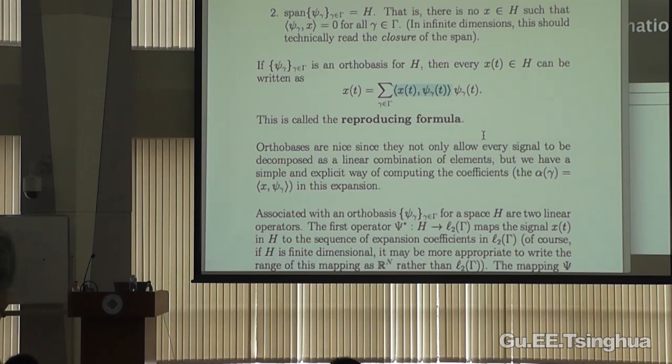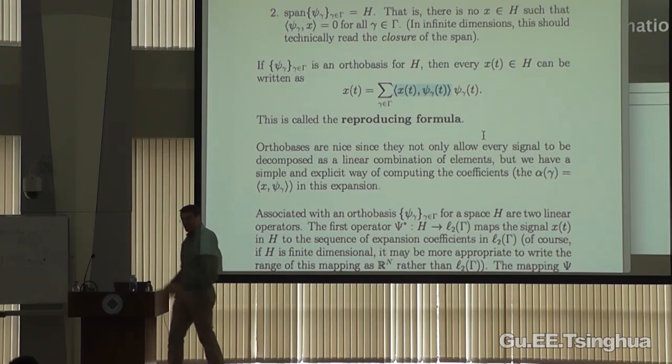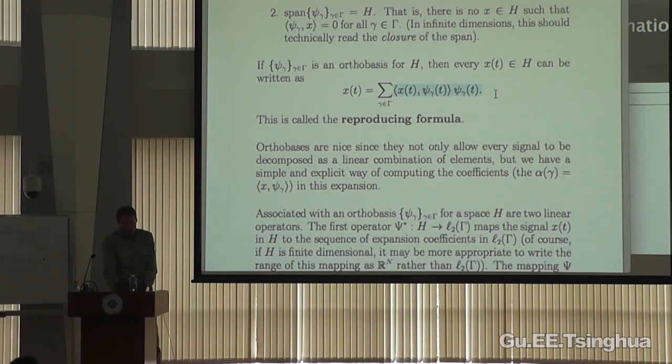To summarize what I mean by orthobasis: I can discretize the signal with a series of expansion coefficients, taking things that are continuous and making them discrete, in such a way that there is a concrete expression for computing what these expansion coefficients are — they're simply inner products between the original signal and the set of basis functions. The inner product is just a mathematical function satisfying certain rules; any time you have an inner product on an algebraic space, you can define an orthobasis and this orthobasis expansion.